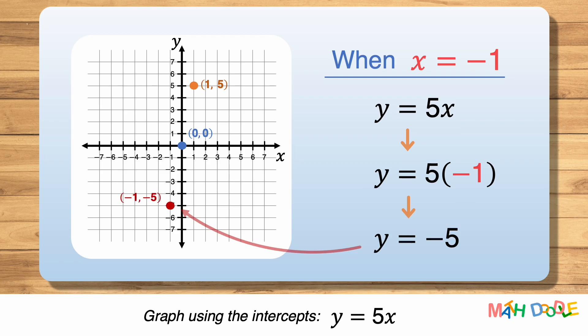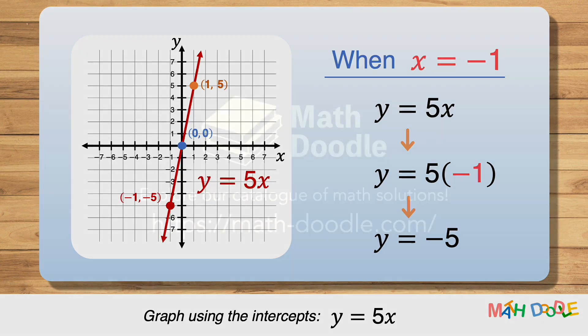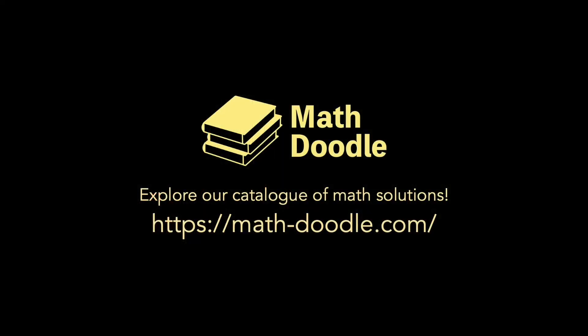Now, we have these three points in a coordinate system, and we can see that the points line up. So, let's draw a line through these points and put arrows on both ends of the line. And this is the line of y equals 5x.